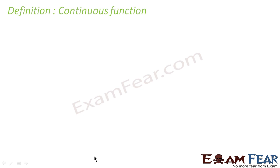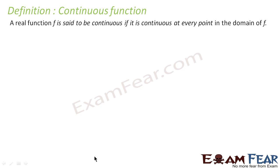Now let's define what is a continuous function. We discussed about continuity at a point and we discussed about discontinuity at a point. A real function is said to be continuous if it is continuous at every point. So first I told you the function is continuous or discontinuous at a point, and now I am saying that a function is said to be continuous if it is continuous at all the points. You take any point and if that function is continuous at every point in the domain of f, we call that function a continuous function.